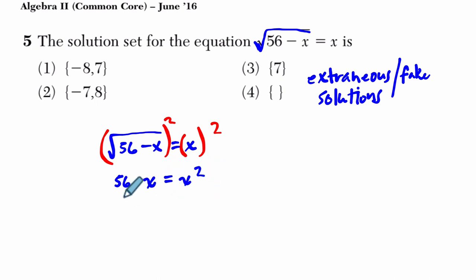Then we get everything on one side. So I get x². I'm going to add this x over and subtract 56. And that's going to equal zero. And then we've got a quadratic. So we've got to factor this thing.